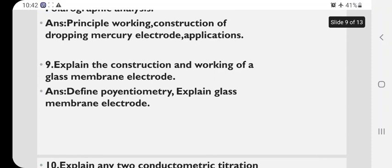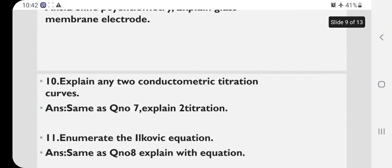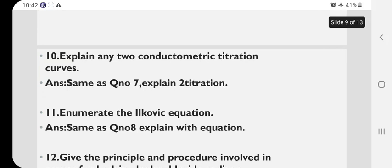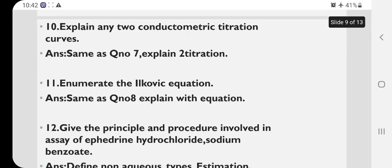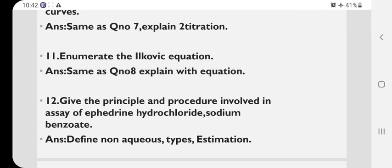Explain the construction and working of glass membrane electrode. Explain any two conductometric titration curves. That is same as question number 7. Two conductometric titration means either you can explain the strong acid or strong base, weak acid or weak base, anyone among them. Enumerate the Ilkovic equation. Same as question number 8.